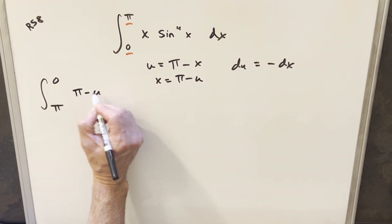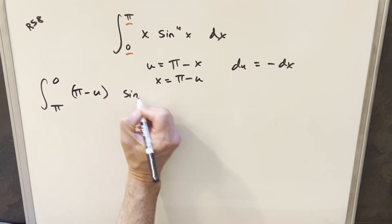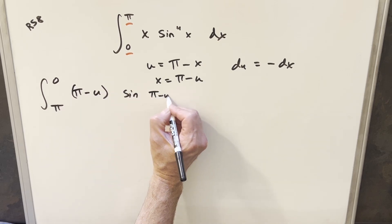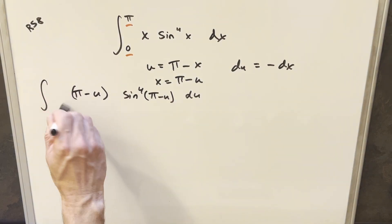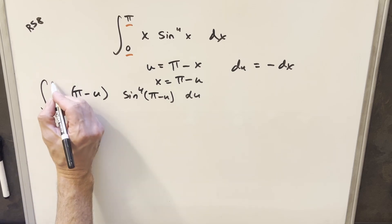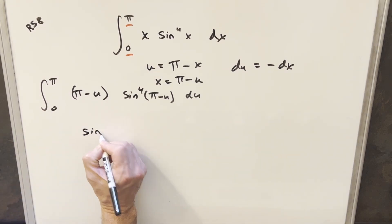So I'll write that in, our pi minus u, and then we're going to have sine of pi minus u to the fourth du. But I'm going to have this minus sign here, but what I'm going to do with the minus and the du, I'm just going to bring that out front of the integral and use it to flip my bounds to get it back to what we had. So this is going to be going from zero to pi again.